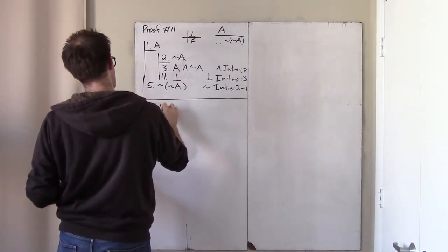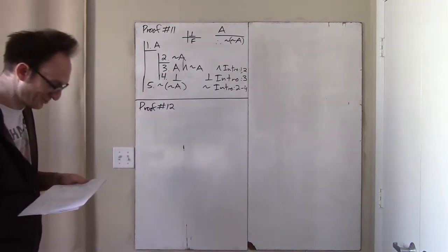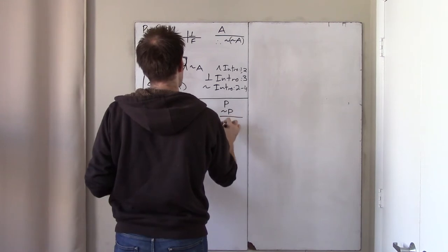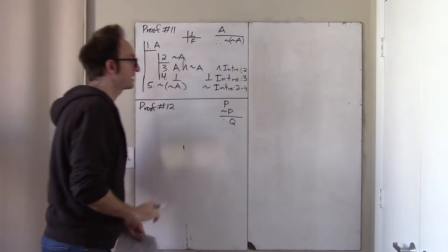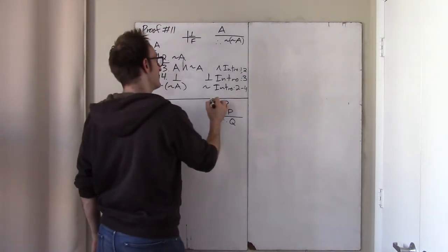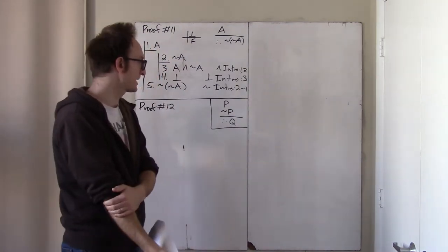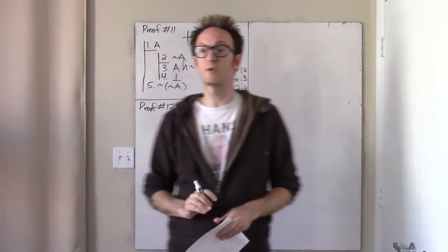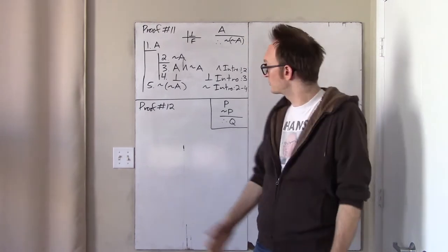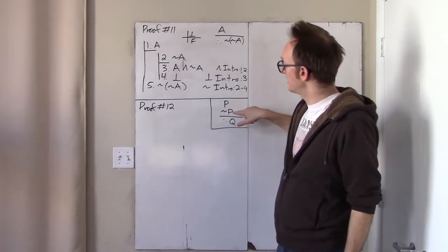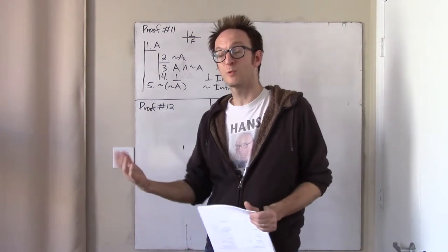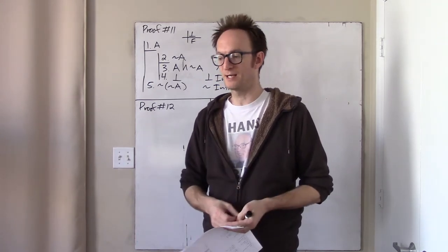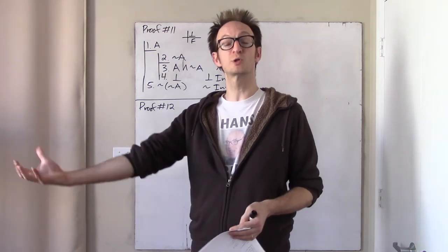Now let's try proof 12, which is kind of controversial. Proof 12 asks you to do the following: from premises P and not-P, conclude Q. This is kind of crazy. There are two premises, P and not-P, and then there's this conclusion Q. This argument is bewildering because P and not-P can't both be true — if P is true, the second premise is false, and vice versa. So this is an argument in which it's simply impossible for both premises to be true.